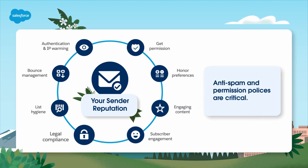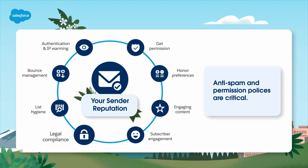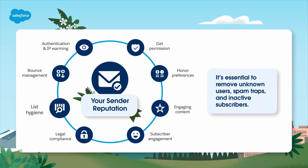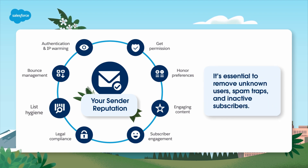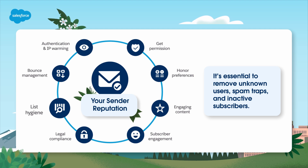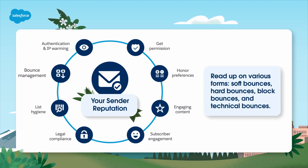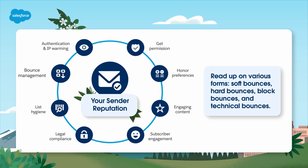Legal compliance — compliance with anti-spam and permission policies is critical. Ensure that subscribers have explicitly opted in to receive your emails. Permission-based marketing is no longer optional; it's a requirement. List hygiene — maintain a clean email list by removing unknown users, spam traps, and inactive subscribers. List hygiene is essential for maintaining good deliverability. Bounce management — bounced emails come in various forms: soft bounces, hard bounces, block bounces, and technical bounces. Read up on each to help you manage email deliverability effectively.